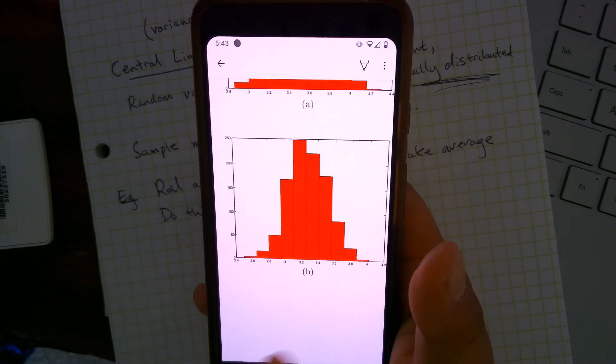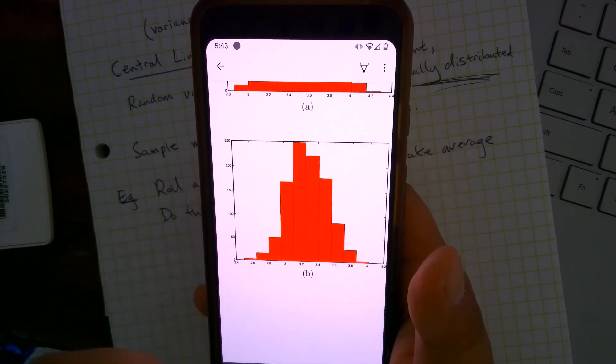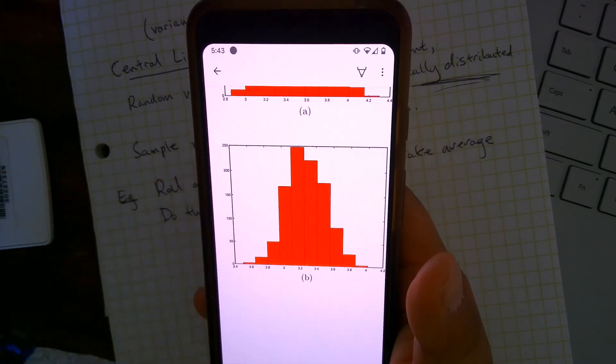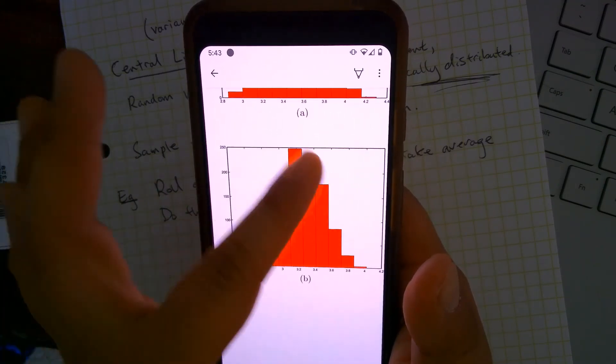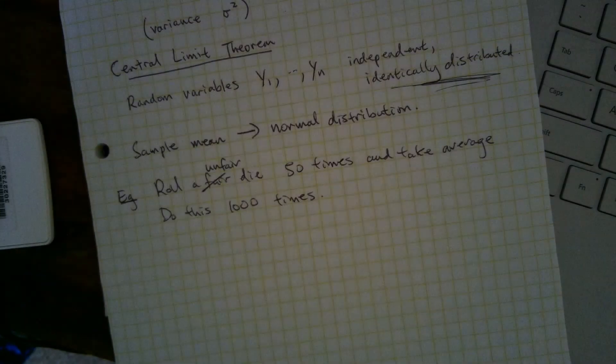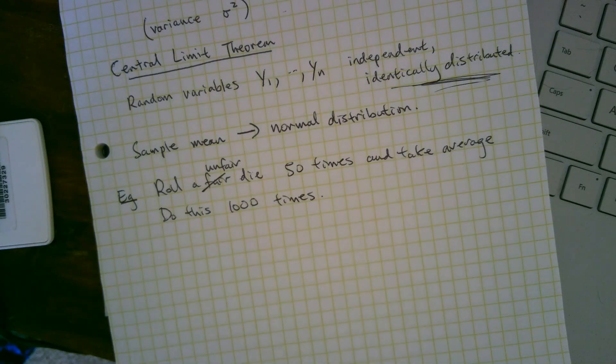Mean will change, and standard deviation will change. So that stretches and shrinks the normal distribution graph. But this is still approximately in the shape of a normal distribution. So that's pretty cool. The central limit theorem says, as long as we're identically distributed, we don't care what the distribution is, we will see a normal distribution.